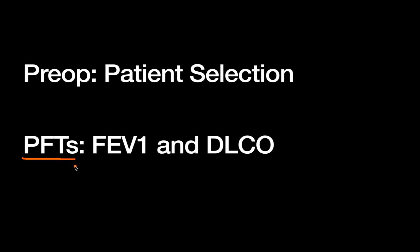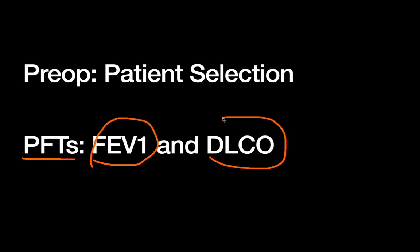Independent of cardiac clearance for surgery, we have to think about pulmonary clearance. That's typically done using PFTs as part of the preoperative clearance strategy. The two PFT values you really need to focus on are the FEV1 and the DLCO. Don't worry about scrolling through the whole PFT report — what you need to seek out for your preoperative thoracic surgery patients are the FEV1 and the DLCO.